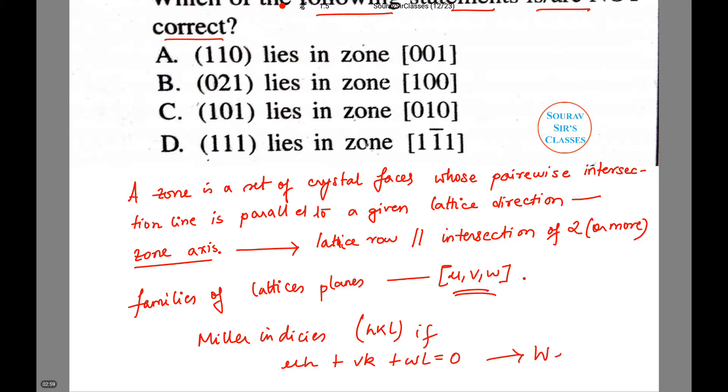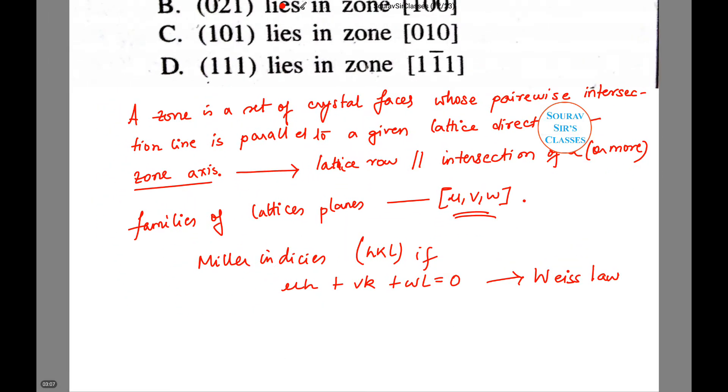If and only if u·h + v·k + w·l = 0, and this is called the Weiss law. The indices of the zone axis defined by two lattice planes (h₁, k₁, l₁) and (h₂, k₂, l₂) are given by the cross product formula: u = k₁l₂ - k₂l₁, v = l₁h₂ - l₂h₁, w = h₁k₂ - h₂k₁.